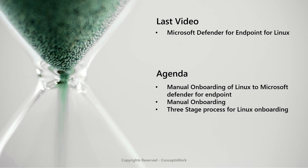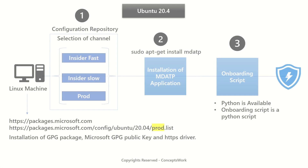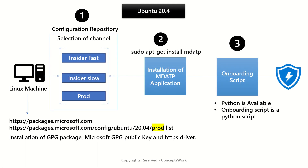We'll also talk about the three-stage process of onboarding and making sure the machine gets reflected on the MDE portal. Just a quick recap about the deck we used in our last video: we will be selecting a specific channel, then installing the GPG package, adding the public key, and installing the HTTPS driver. Now I'm going to switch to my machine that I will be onboarding to MDE and demonstrate it end-to-end.